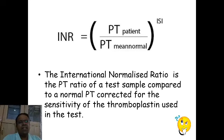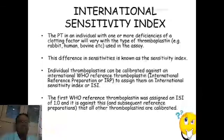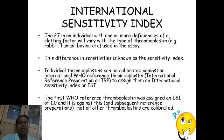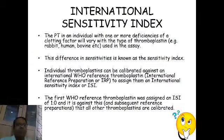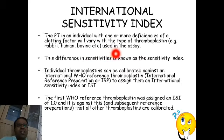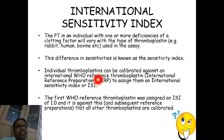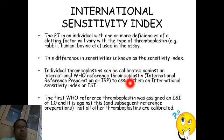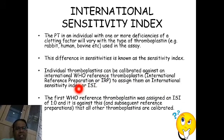ISI is the international sensitivity index. The concept arose because the PT in an individual with one or more clotting factor deficiencies will vary with the type of thromboplastin used in the assay — for example, whether it is rabbit, human, bovine, or otherwise. This difference in sensitivities is known as the sensitivity index. Individual thromboplastins (the prothrombin reagent) should be calibrated by manufacturers against the international WHO reference thromboplastin, also called the international reference preparation (IRP), to assign them an ISI.